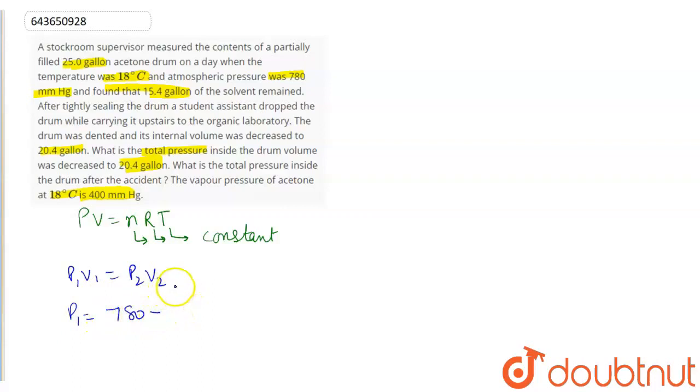We have the vapor pressure which we have to subtract to get the gas pressure inside the drum. We have to subtract the partial pressure. So this will be 380 mmHg. Now we have V1.